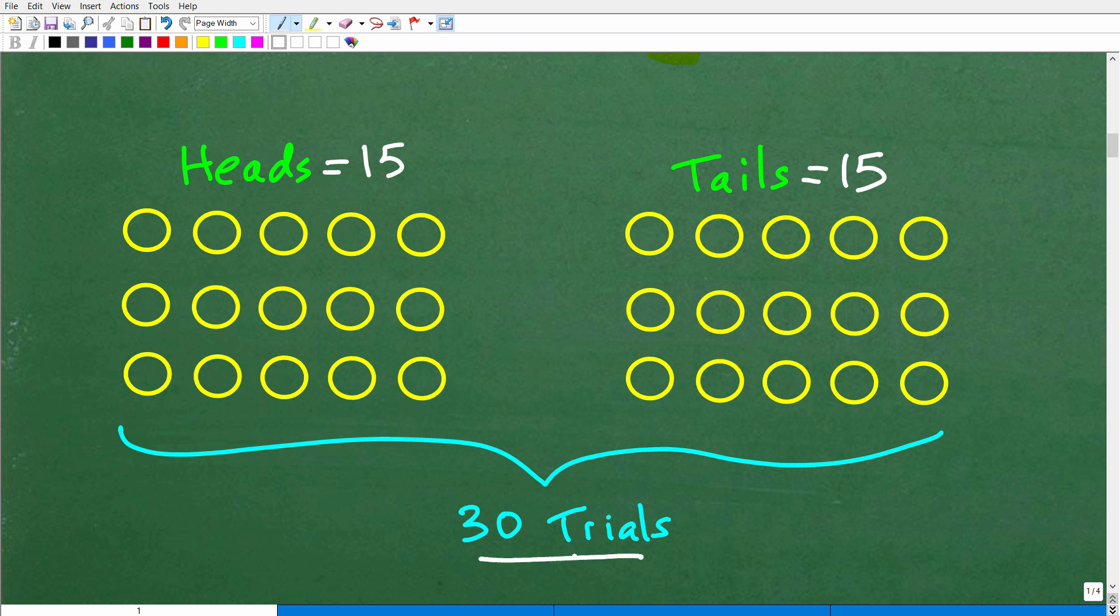But again, is there any guarantees? Well, no. Okay. So let's take a look at this theoretical probability. So here is 30 trials. Let's get our coin out and let's flip this thing. So this is not the way the real world works. You have 50% of the time that this coin is going to come up tails. So I flip this thing 30 times.